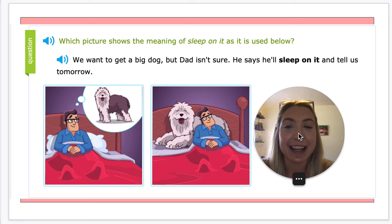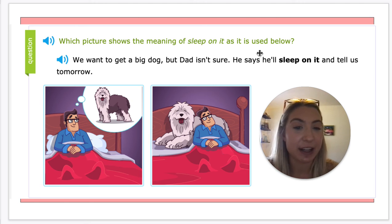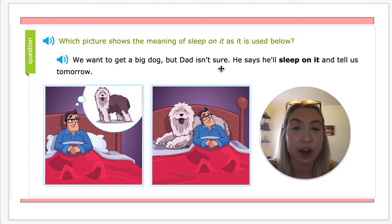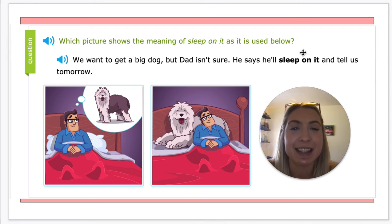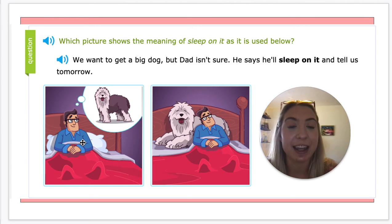Which picture shows the meaning of 'sleep on it' as used below? Let's read it in context: 'We want to get a big dog, but dad isn't sure. He says he'll sleep on it and tell us tomorrow.' So they don't have the dog yet, but it sounds like they want one. In this sentence, does 'sleep on it' literally mean the dad's going to sleep on the dog? No — it means he's going to think about it. He's going to spend the night thinking about it and then he'll have his answer tomorrow.